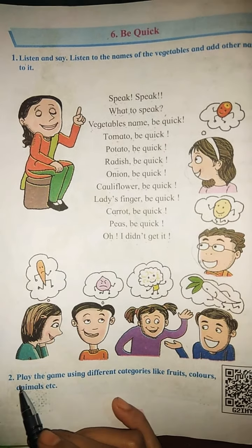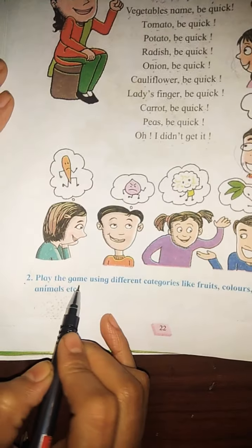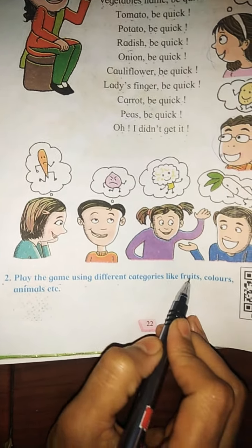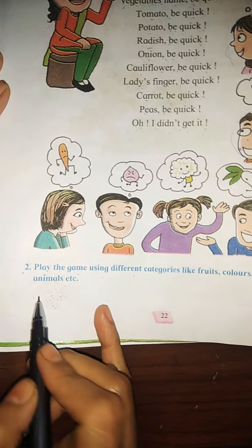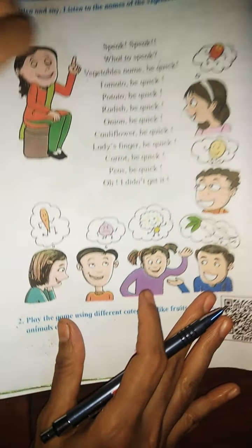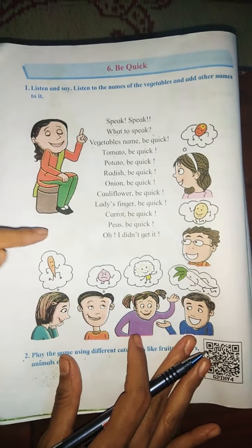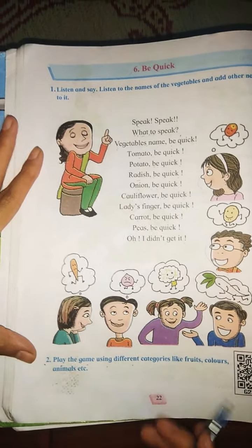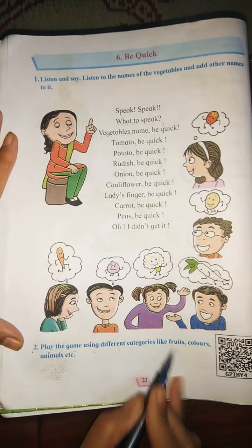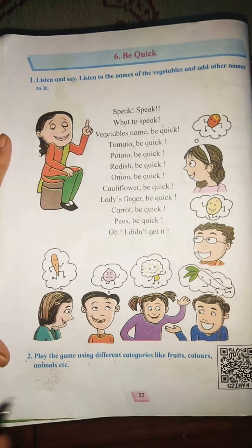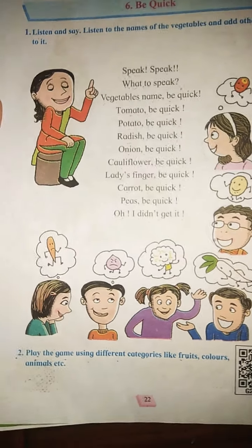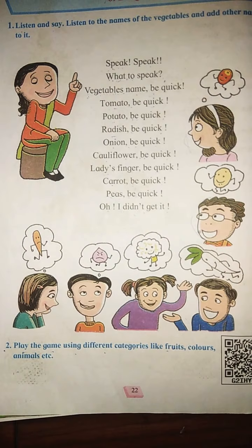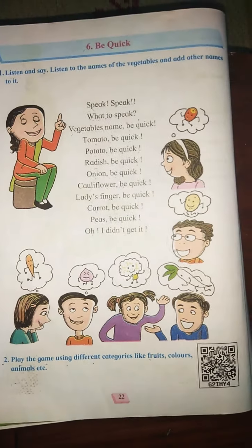Matlab idhar dekho — second one kya dekh raha hai? Play the game using different categories like fruits, colors, animals. Idhar sab vegetables ke naam diye hain is poem mein. Aap iski jagah fruits ka bhi naam de sakti hain, colors ka bhi. Matlab aap khel ki tarah is poem ko bolna hai, khelna hai. Abhi main vaapas se bolta hoon.